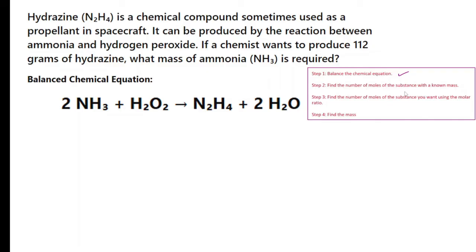Find the number of moles of the substance with a known mass. So which one here is a known mass? The problem states if a chemist wants to produce 112 grams of hydrazine, so we know the mass of hydrazine as 112 grams.